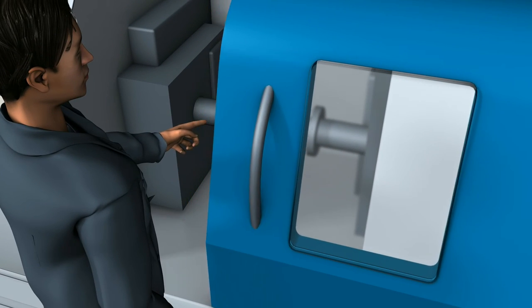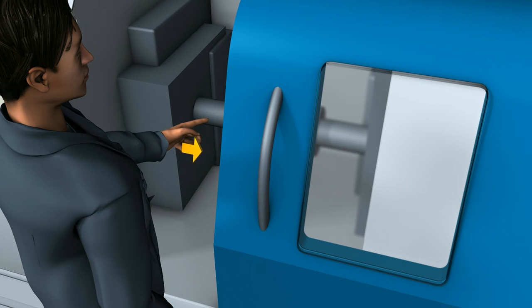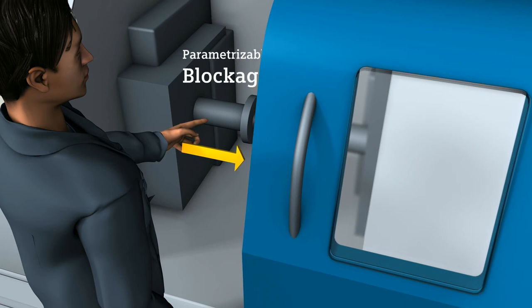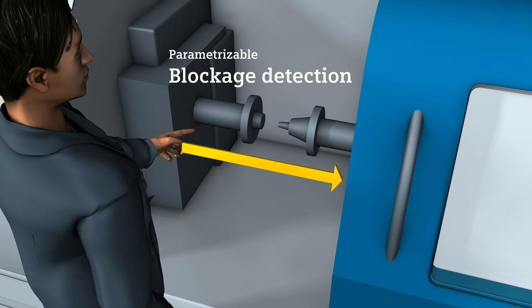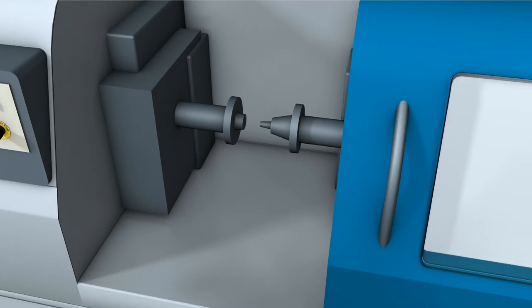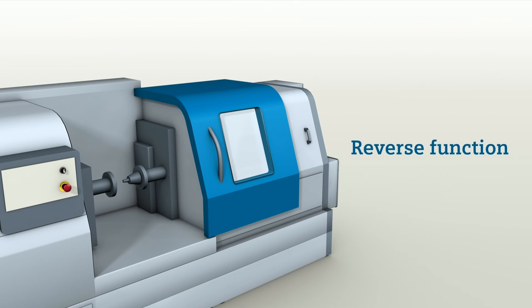Whether the door only backs off a few centimeters or whether it opens completely, you can define this yourself when you parameterize the C-Door controller. With the reverse function of C-Door, you not only achieve more safety, you also have another benefit.